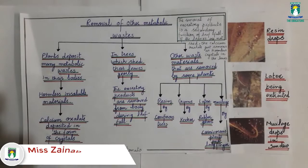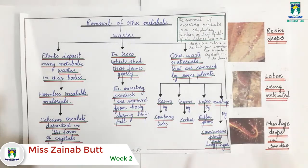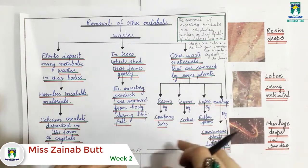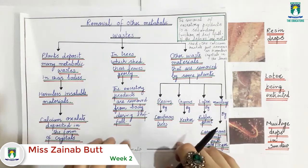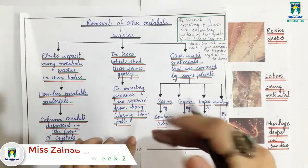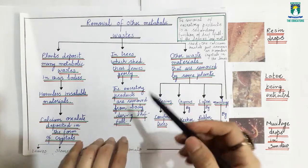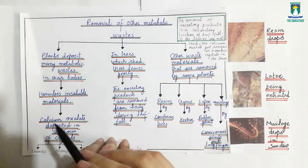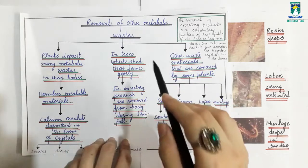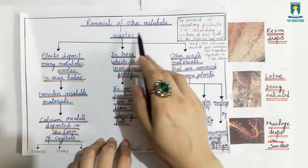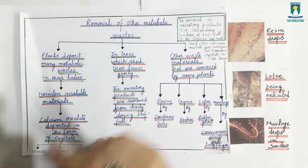We are discussing Class 10 Biology Chapter 11, Homeostasis. We are discussing homeostasis in plants, and now we will discuss the remaining parts of this topic — specifically the removal of other metabolic waste from the plant body.